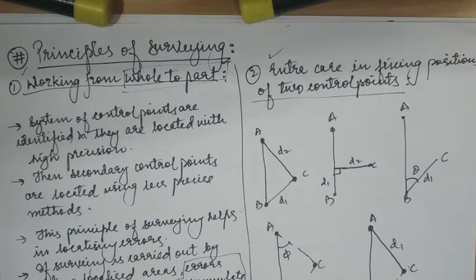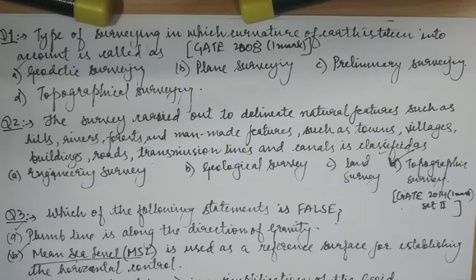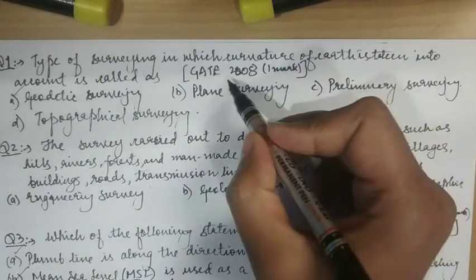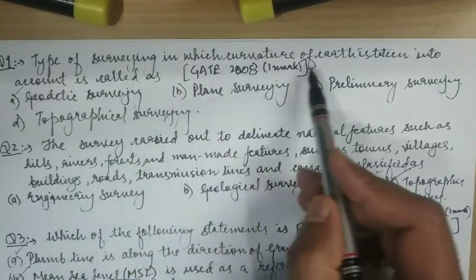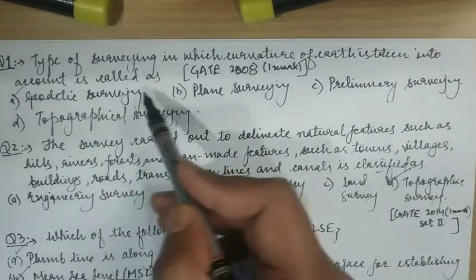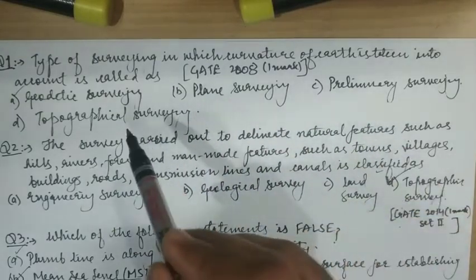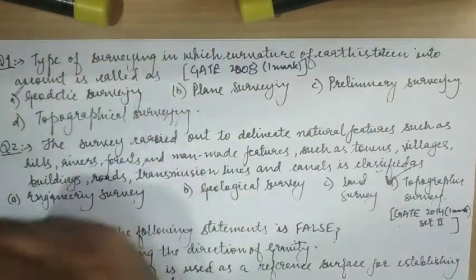We will now discuss some previous year questions from GATE and ESE. First question from GATE 2008 (one mark): 'The type of surveying in which curvature of earth is taken into account is called —' Options: geodetic surveying, plane surveying, preliminary surveying, topographical surveying. As already discussed, when curvature of earth is taken into account, that type of surveying is called geodetic surveying.